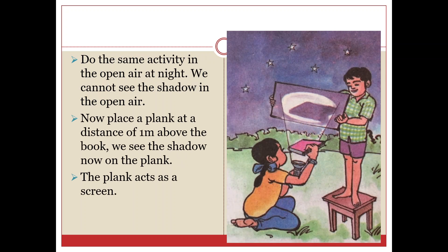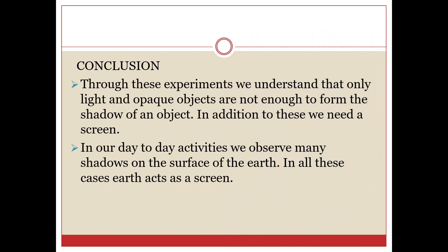Do the same activity in the open air at night. We cannot see the shadow in the open air. Now place a plank at a distance of 1 meter above the book — we see the shadow on the plank. The plank acts as a screen. Through these experiments, we understand that only light and opaque objects are not enough to form the shadow of an object; in addition to these, we need a screen.